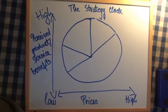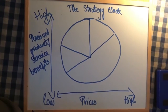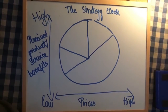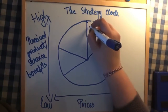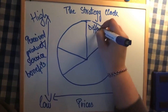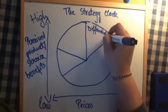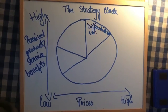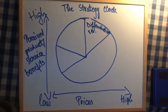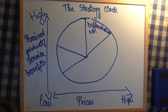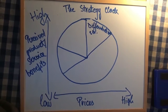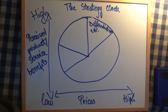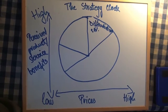Now we continue with the strategy clock. The strategy clock identifies three types of strategies and one type likely to fail. The first is the differentiation strategy, which has a range from 12 o'clock to 2 o'clock and has two types: differentiation without price premium and differentiation with price premium. Differentiation without price premium combines high perceived benefits and moderate prices, while differentiation with price premium is closer to 1 or 2 o'clock, as it is likely to involve a focus strategy.